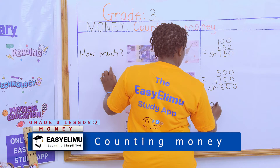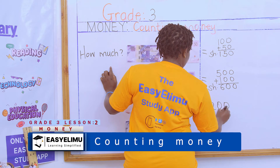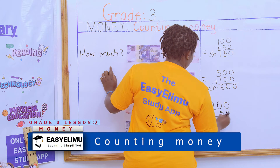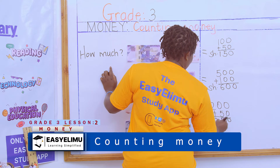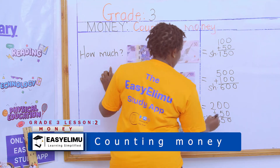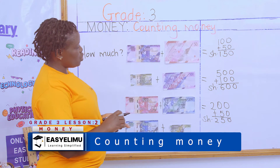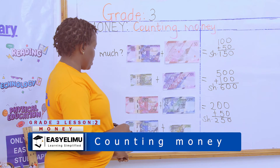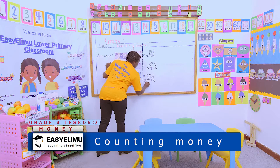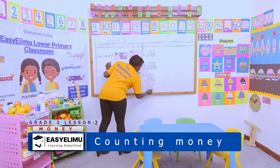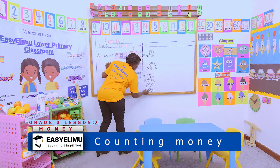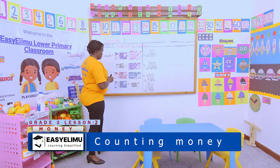This one tells you you have a 200 and a 50. How much do you have? So you add 0, 5 and 2, and together you can tell people you have 250 shillings. This one is telling you you have a 500 and a 200 — very good. Put together, this one comes to 700 shillings.